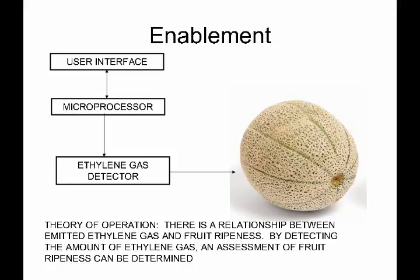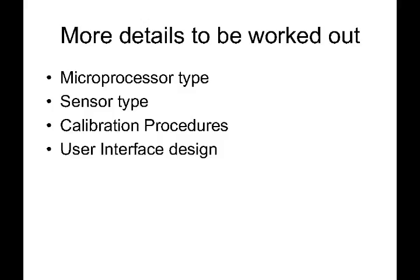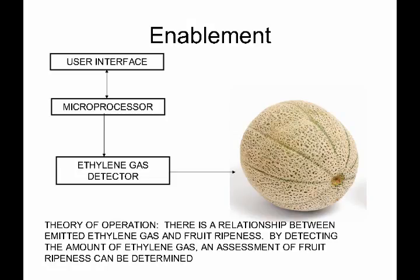Now, just from looking at this, can we build it? Probably not — there's probably other details to be worked out: the kind of microprocessor, the kind of sensor, calibration procedures, user interface design, all these different things. But going back to enablement, at least we have the basic approach as to how it's going to work. So at this level, we're starting to get into having an invention to work with. If you have an idea but you have no clue as to how it would work, you're probably still at the idea stage and you need to get a little more technical detail into how it will actually work to transition from the idea stage to the invention stage.